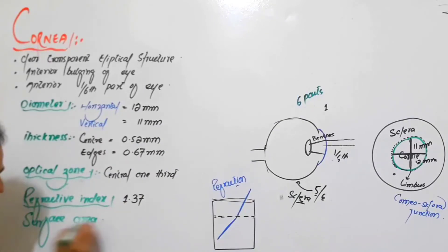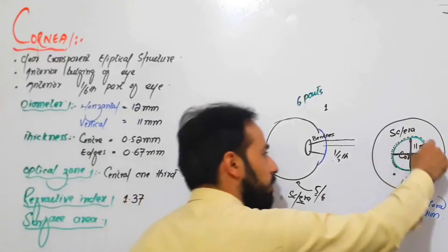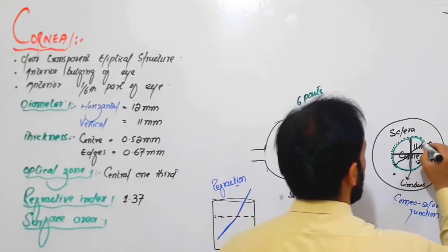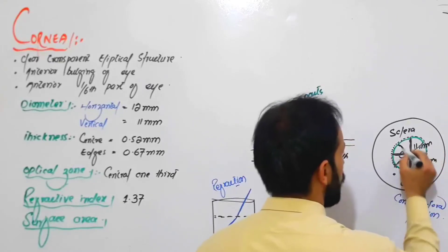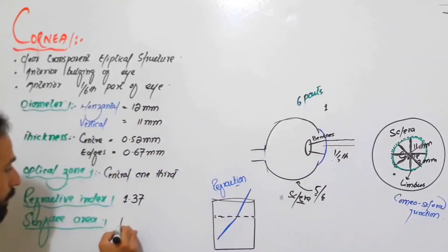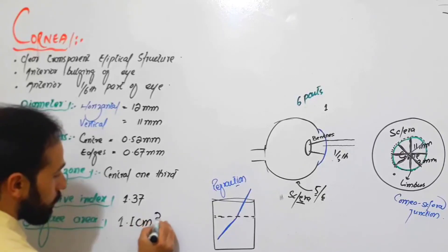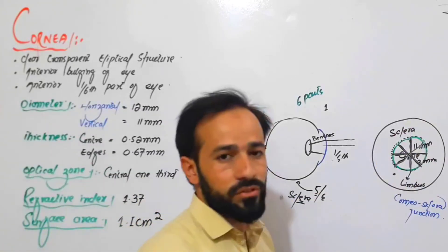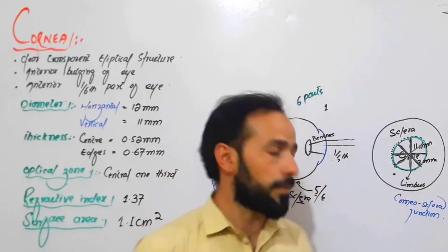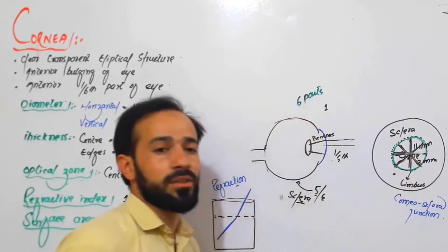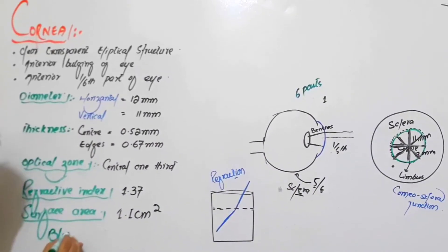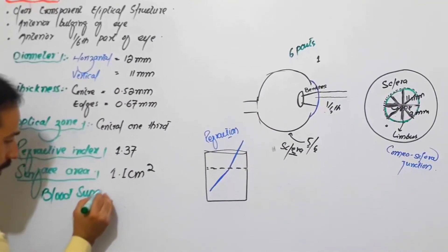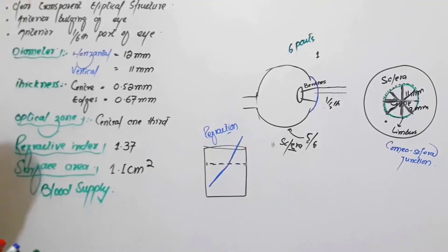The surface area of the cornea: if you measure the surface area from any side, it is 1.1 centimeter squared. Next, regarding blood supply: there is no blood supply to the cornea — we say the cornea is avascular and has no blood vessels.